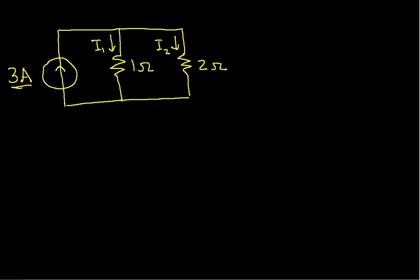Unlike what you might think, many people will assume that the current splits evenly between the two resistors. But because the two resistors have different values, it turns out that the current through the 1 ohm resistor is larger than the current through the 2 ohm resistor. Current takes the path of least resistance, or at least more current takes the path of least resistance.